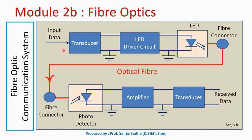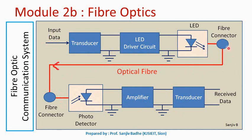The signal is amplified with the help of an amplifier, and again a transducer is used to convert that electrical signal back into the original signal. So here we get the received data, which is the same as the transmitted data. The optical fiber is used to connect the transmitting end and the receiving end, and the signal is transmitted through the optical fiber in the form of light.